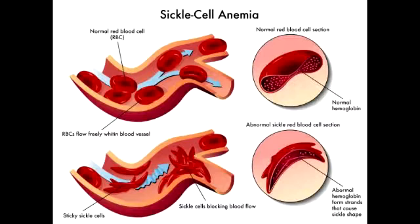What are some treatment options for sickle cell anemia? The treatment options include hydroxyurea, which is known to increase hemoglobin F, as well as bone marrow transplantation.